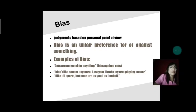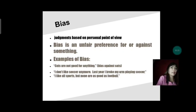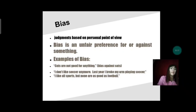Examples of bias: 'Cats are not good for anything.' He or she is biased against cats — that is only their personal point of view. Next example: 'I don't like soccer anymore.' Last year, I broke my arm playing soccer. So, he or she is biased against soccer because this person thinks about their broken arm when they think about soccer.